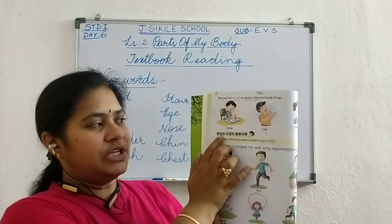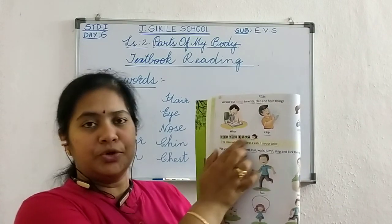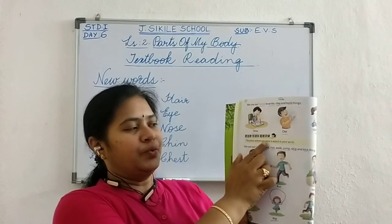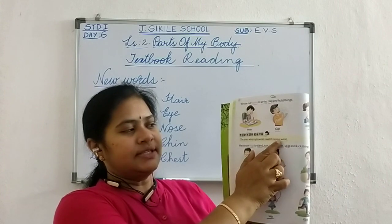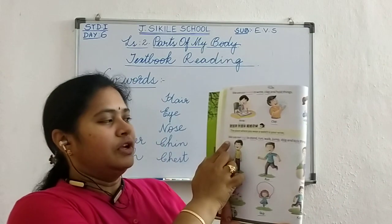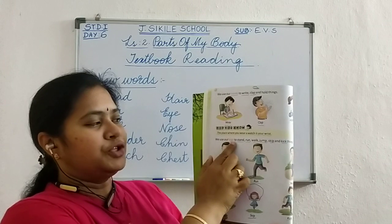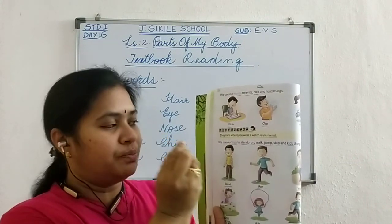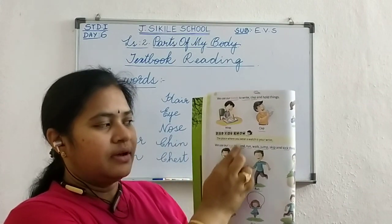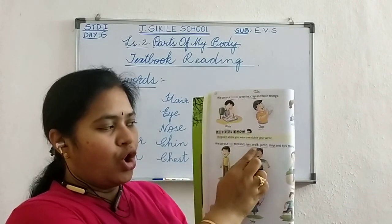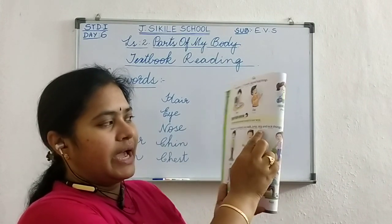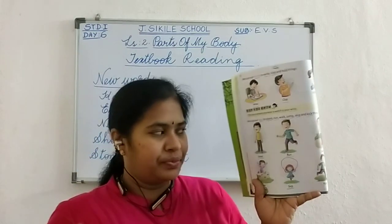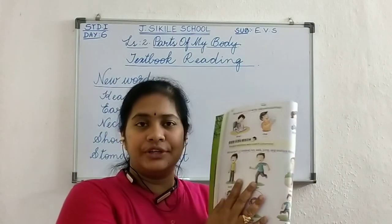See here. D-I-D. Did. Y-O-U. You. K-N-O-W. Know. The place where you wear a watch is your wrist. We use our legs to stand — when a comma is there you have to give a little pause. We use our legs to stand, run, walk, jump, skip and kick things. After 'things' there is a full stop, so you have to stop. Like this you have to read the textbook.